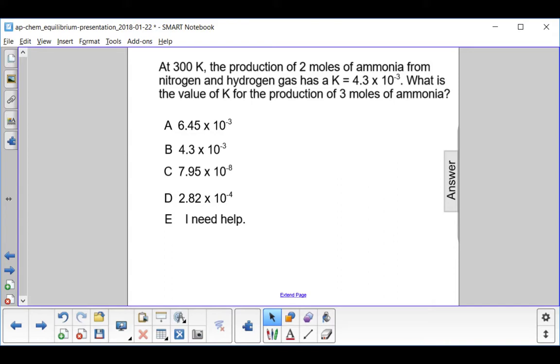At 300K, the production of 2 moles of ammonia from nitrogen and hydrogen gas has a k equal to 4.3 times 10 to the minus third.